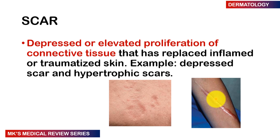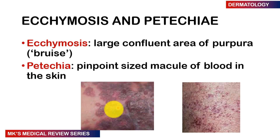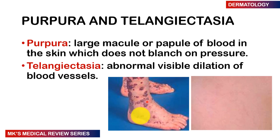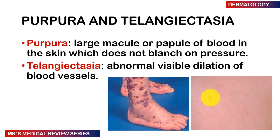Remember the difference between a hypertrophic scar and a keloid: hypertrophic scars are confined to the margins of the wound, while keloids can exceed the margins. Ecchymosis is a large confluent area of purpura — essentially a bruise. Petechiae are pinpoint-sized macules of blood in the skin. Purpura are larger macules or papules of blood in the skin that do not blanch with pressure. Telangiectasia is abnormally visible dilatation of blood vessels.